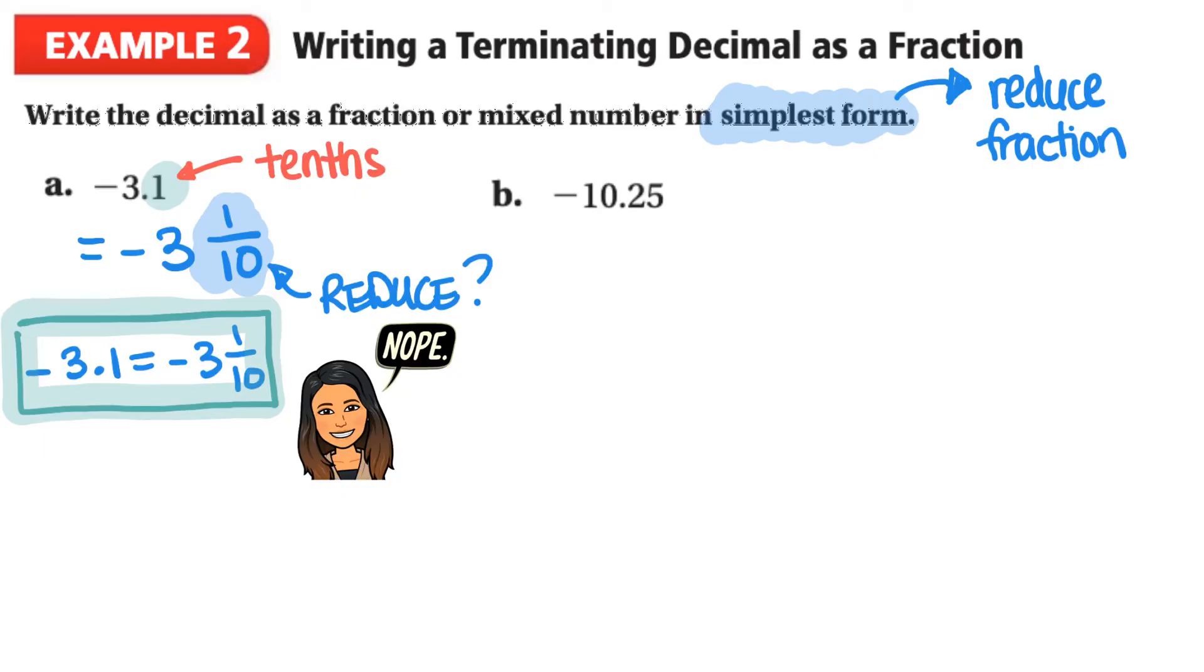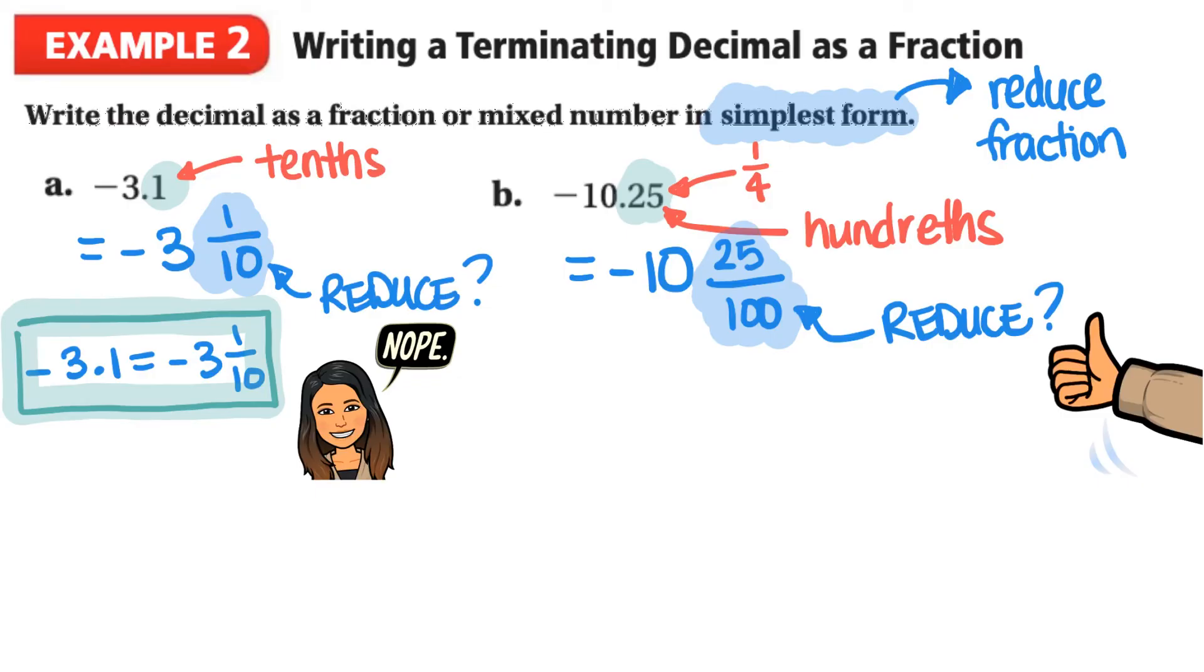So for letter B, we've got negative 10.25. So again, we've got that whole number in front. So our mixed number is going to have a negative 10 in the front and then 0.25 again. If you don't remember that 0.25 is 1 quarter, what we're going to do is we know that the 5 is in the hundredths place. So this means that we have 25 over 100. That's what 25 hundredths is. So then we have negative 10 and 25 over 100.